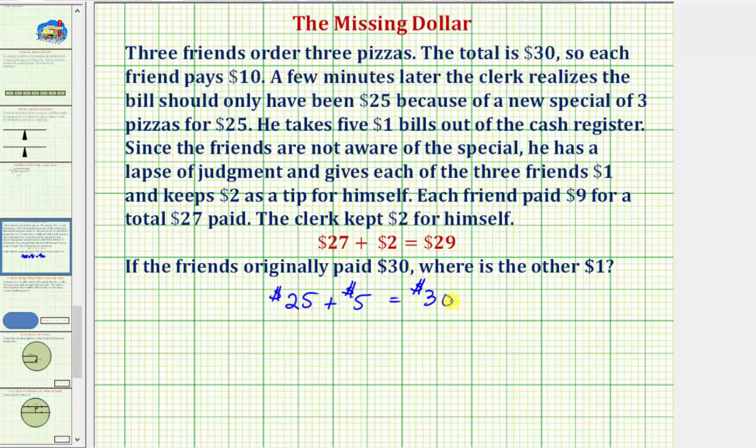So again, of the $30, $25 was for the pizza and they paid $5 extra. Now the clerk took these five extra dollars, kept two of the dollars, and returned three dollars to the friends. So let's write this $5 as $2 plus $3.